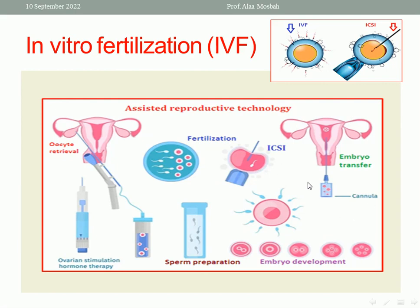In ICSI, the same procedure is done, but instead of leaving the sperm to fertilize the oocyte in the dish, we inject one single sperm inside the oocyte. We can fertilize more than one oocyte, but each one is fertilized by only one sperm injected inside it. This is called intracytoplasmic sperm injection.